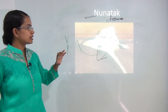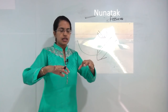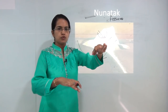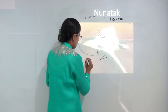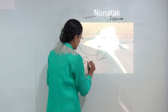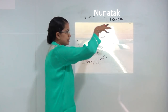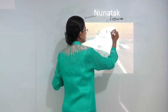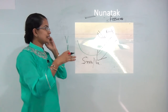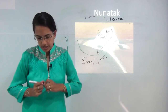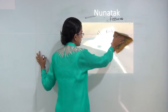Nunataks are rocks or mounds that remain as the glacier moves, with ice cover all around. All that you can see is snow or ice — this is all glacier — and there is a rock mass that stands in between. This rock mass, which is not a glacier but stands as a higher peak compared to the surrounding areas, is known as a nunatak.